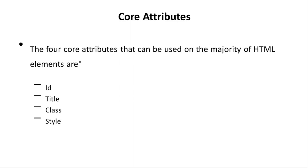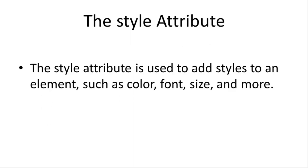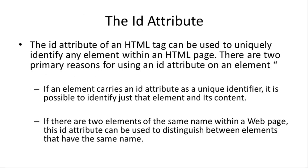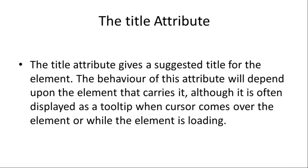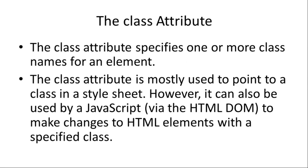We are going to discuss some of the core attributes: ID, Title, Class, and Style. We are going to discuss the style of our elements and content — the font, the size, the background, the color, etc. We will cover style attributes, ID attributes, title attributes, and class attributes, along with the four attributes and code.